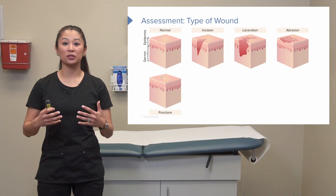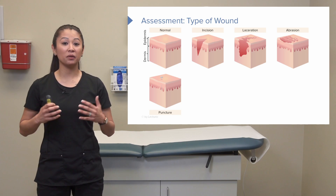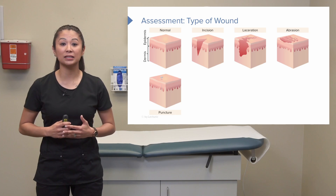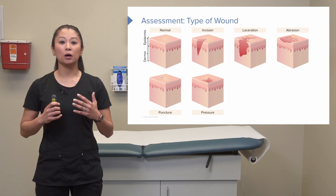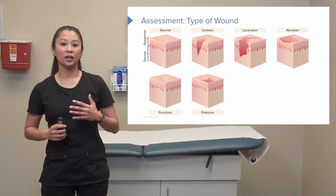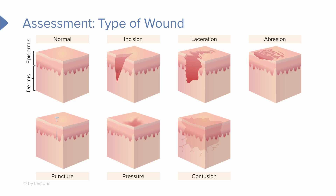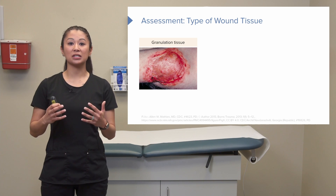A puncture wound, while less common, would be something like a knife wound seen in an ER setting. A pressure wound is very commonly seen when a patient is immobile in bed, and it can range from mild to severe. A contusion is different — the skin is intact, think of it more like a bruise. Lastly, a hematoma is a pocket of blood caused by some sort of bleeding or trauma.